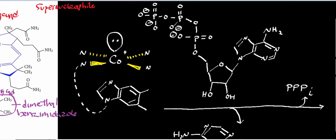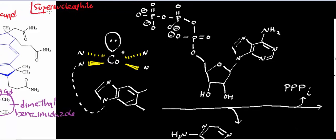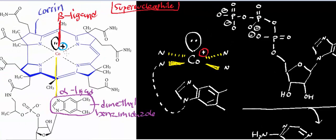Just to say it once again: cobalt 1+ is a super nucleophile. I know it's a little unintuitive that a cobalt with a plus-one charge — a positively charged transition metal — is not a weak nucleophile but a tremendous nucleophile. When you studied organic chemistry, nucleophiles were generally negatively charged. But because of the electronics of the corrin ring system, the cobalt in the one-plus state can actually act as a super nucleophile.